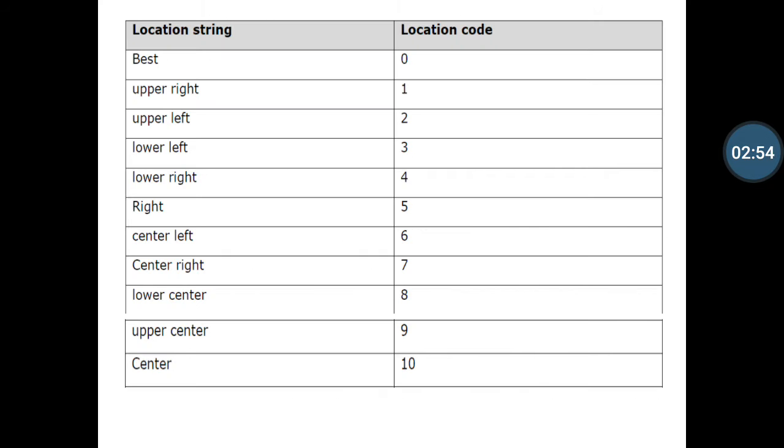So students, I am giving a table for using legend axes parameters. You can see that for the code behind the string, for example 'best' we can use code 0, 'upper left' for 2, 'lower left' for 3, 'lower right' for 4.